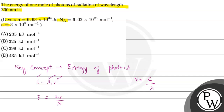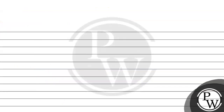This formula is for one photon. According to the given question, we need to find the energy for one mole of photons. One mole is equivalent to Avogadro's number, so the energy of one mole of photons equals HC divided by lambda, multiplied by Avogadro's number.